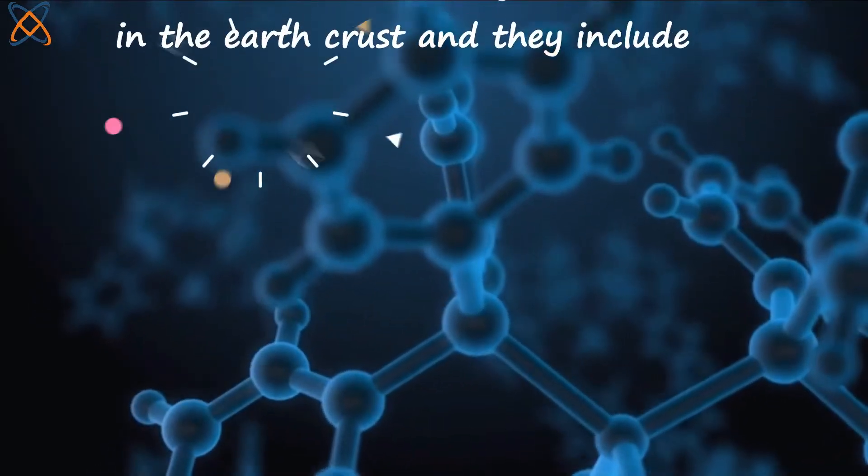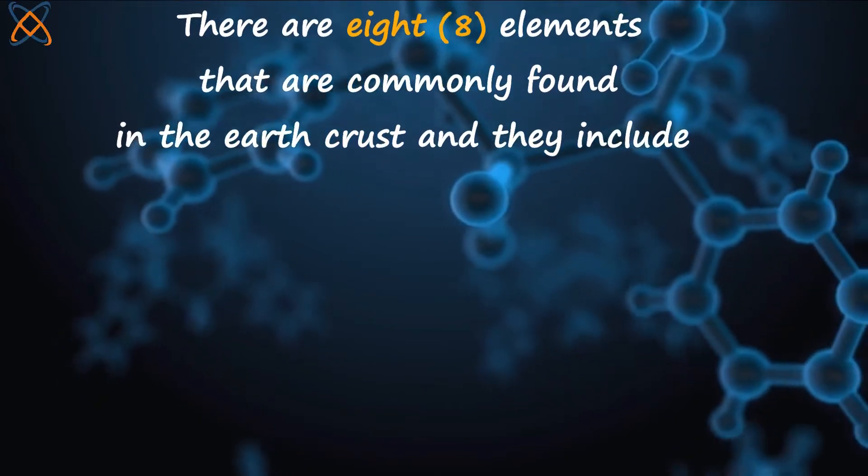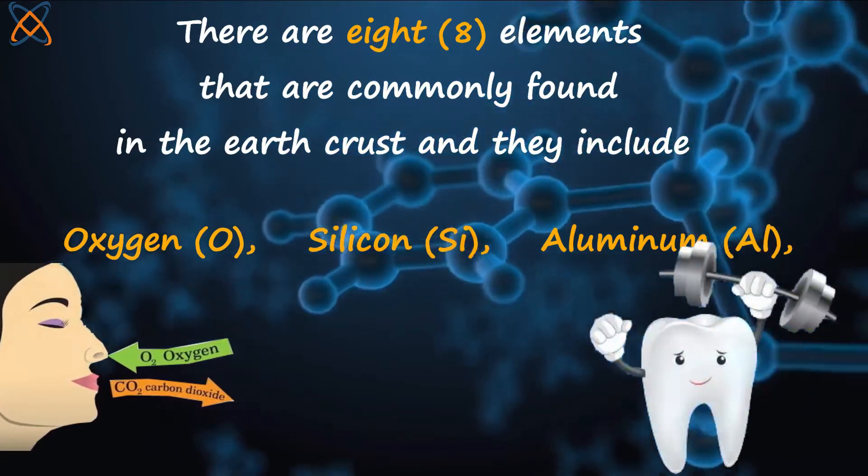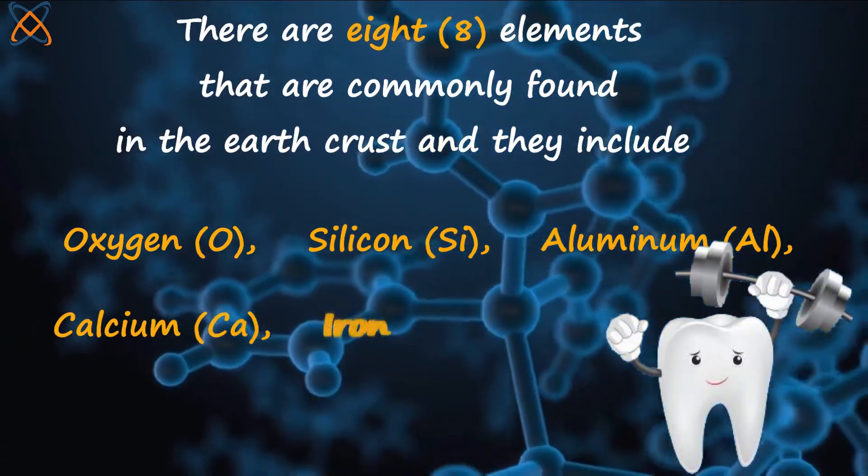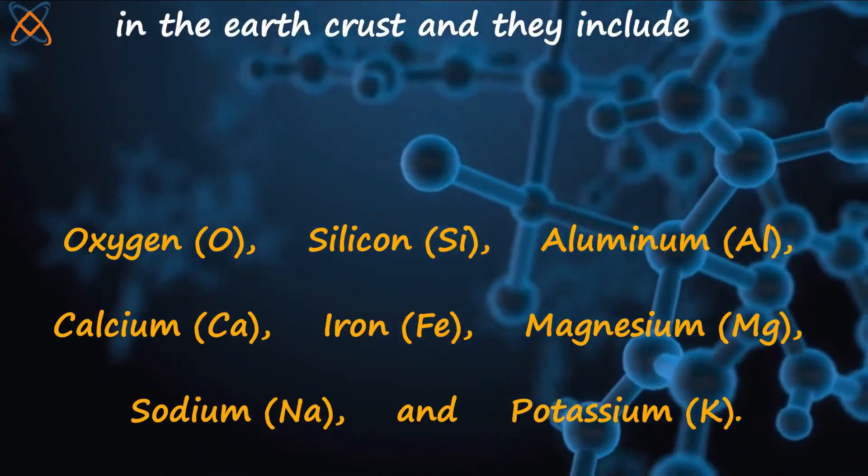There are eight elements that are commonly found in the Earth's crust and they include oxygen which we breathe, silicon, aluminum, calcium for stronger teeth, iron, magnesium, sodium and potassium.